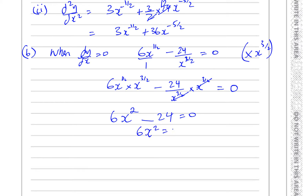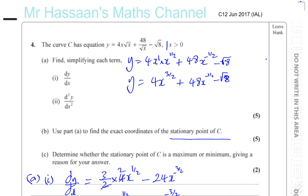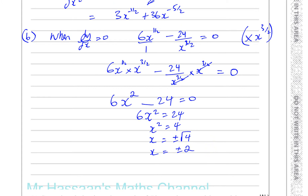So 6x squared equals 24, therefore x squared equals 4, so x equals plus or minus 2. However, at the beginning of the question we were told x must be greater than 0. Therefore, x must equal just 2.